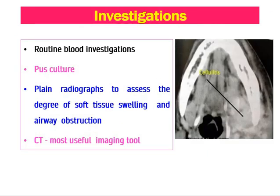To investigate a case of Ludwig's angina, routine blood investigations are performed. If pus is present in the oral cavity or can be drained, it should be sent for Gram stain and culture. Plain radiographs were previously used to assess soft tissue swelling, but nowadays CT scan is the most useful imaging tool — preferably with contrast — as it shows inflammation, abscess, areas of pus collection, and spread of infection from one space to another.